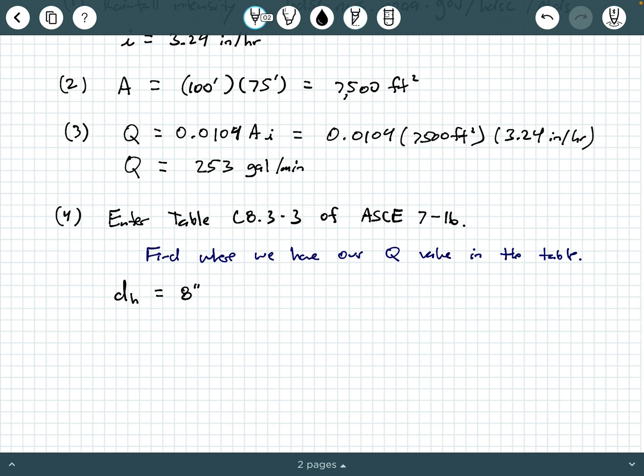And so, finally, step five, we can calculate our rain load. Step five is R equals 5.2 DS plus DH. And so, that's 5.2 times 2.5 inches plus 8 inches. And I'm going to use my TI-36X Pro calculator. So, I get 54.6 PSF. Our rain load acting on the roof that we would need to design for is 54.6 PSF.